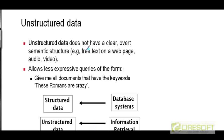Unstructured data, on the other hand, does not have a clear overt semantic structure. The best example is free text on a web page. Audio and video content is also unstructured, as are blog posts. Think of free text as the canonical example of unstructured data. When your data is not organized into a relational database and does not have explicit structure, you don't really know what the data means. As a human being you can read free text and understand it, but it's very hard for a computer. So when your data is unstructured, your queries need to be extremely simple for us to be able to build a system to answer them.